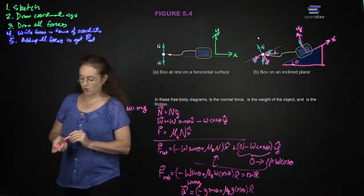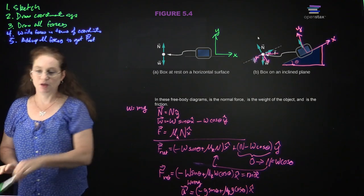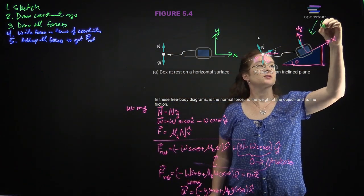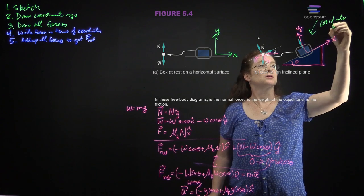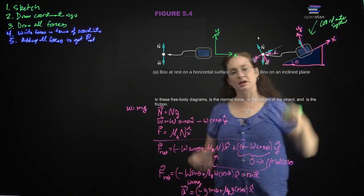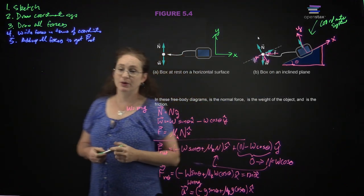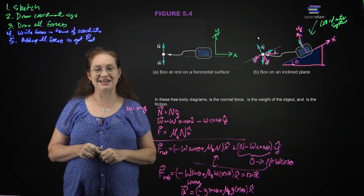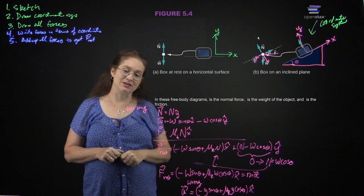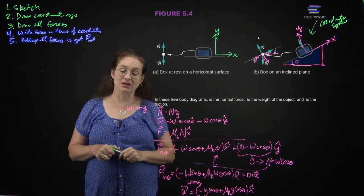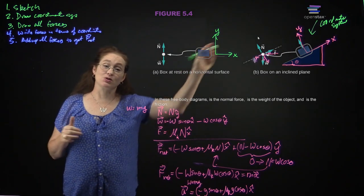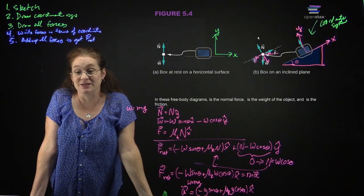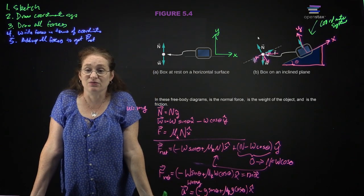A few important things about this problem. First, coordinate system: you are choosing a coordinate system aligned with the objects in the problem so you can set the constraints more easily. A good physicist is a lazy physicist — choose the right coordinate system and you make your own life a lot easier. Choose the wrong one and you can get lost in a morass of algebra.